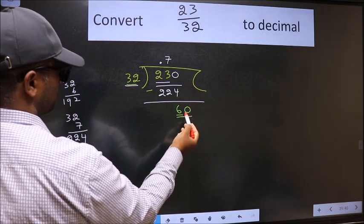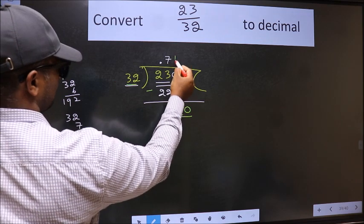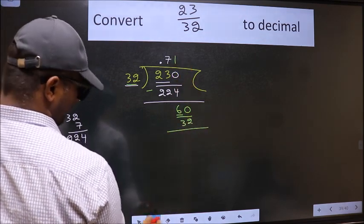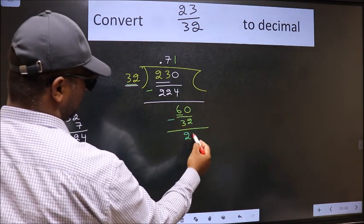So 60. A number close to 60 in 32 table is 32 once, which is 32. Now we should subtract. We get 28.